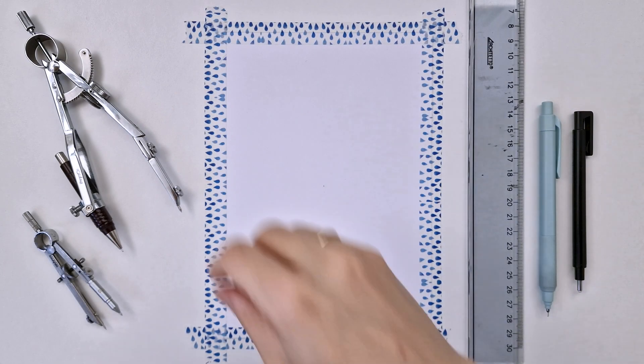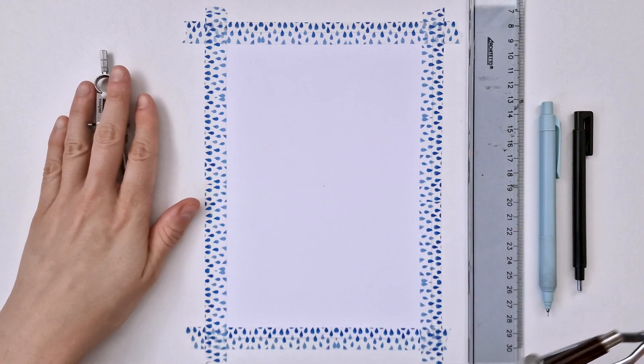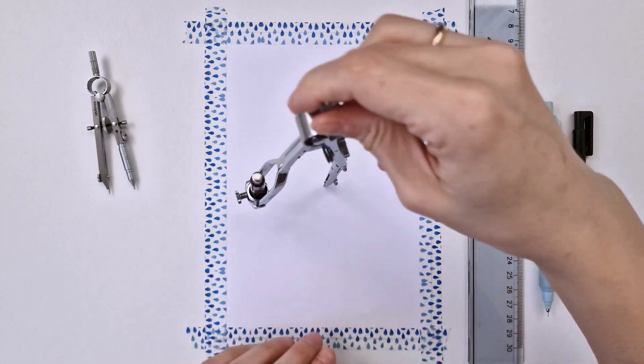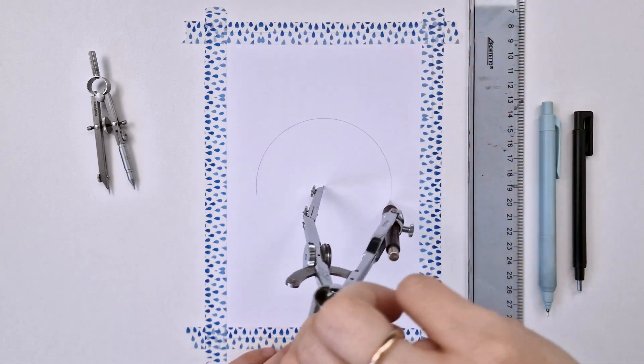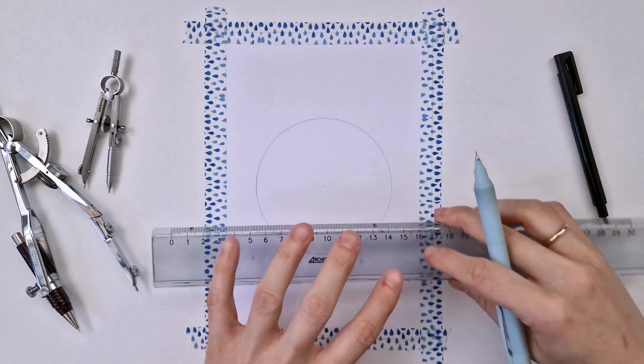Hello everyone, today we're gonna learn how to divide the circle into three equal parts. Let's start with our circle. You can make it any radius you want. Here I'm using a five centimeters radius. Next thing I'm gonna draw a horizontal line.